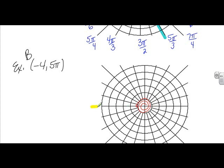And then we're going to count negative 4 units. So we're going to go to the other side of the circle and count out 4 units. 1, 2, 3, 4. There's our point B.